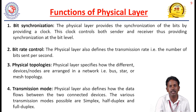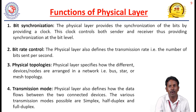Bit synchronization provides synchronization of bits using a clock, which controls both sender and receiver at the bit level. Bit rate control defines the transmission rate — that is, the number of bits sent per second. Physical topology refers to the arrangement of nodes in the physical structure; different topologies include star, bus, tree, mesh, and ring topology.